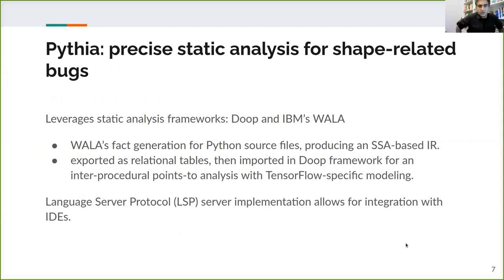Now, our analysis is called Pythia, and it's a precise static analysis for shape-related bugs. It leverages standard static analysis frameworks, like the Doop framework from my group and IBM's WALA framework. WALA does front-end fact generation from Python source files and gives us an intermediate representation in static single assignment form. This is exported as relational tables, which are then imported into Doop. And Doop specifies an inter-procedural points-to analysis over the Python code with some TensorFlow-specific modeling. In terms of clients, we have an integration with IDEs by leveraging the language server protocol. So, we have a language server implementation that lets you see the results in an IDE.